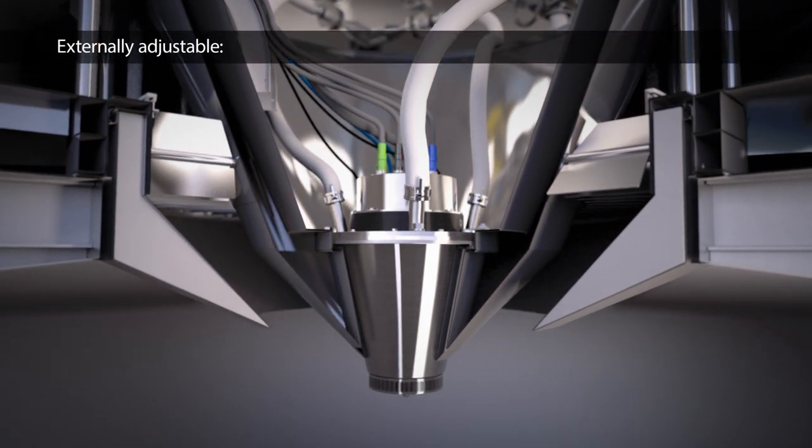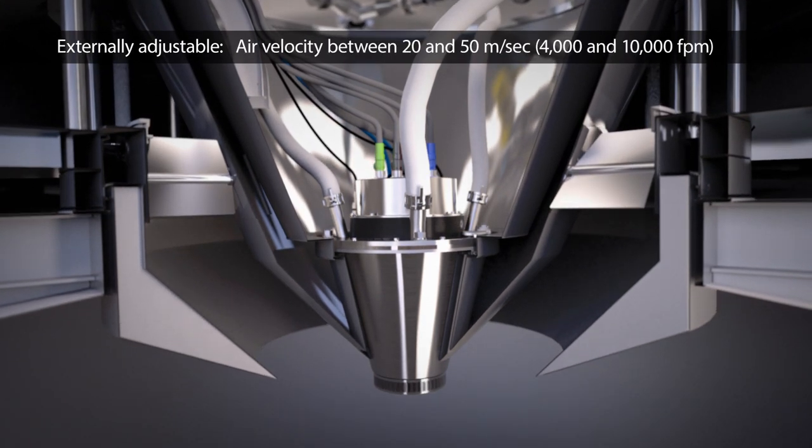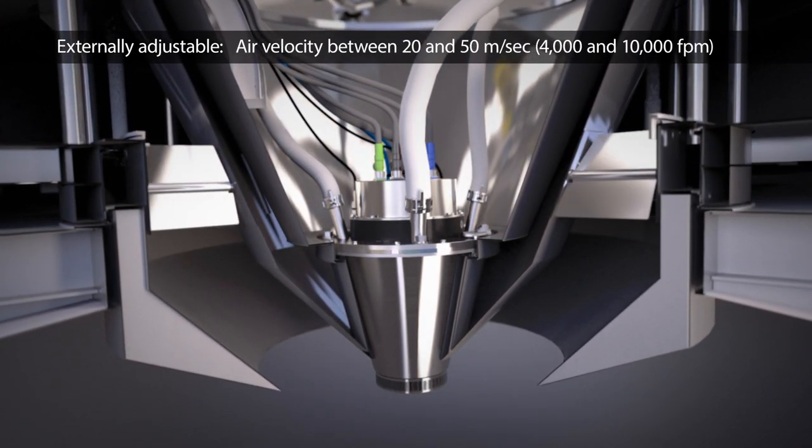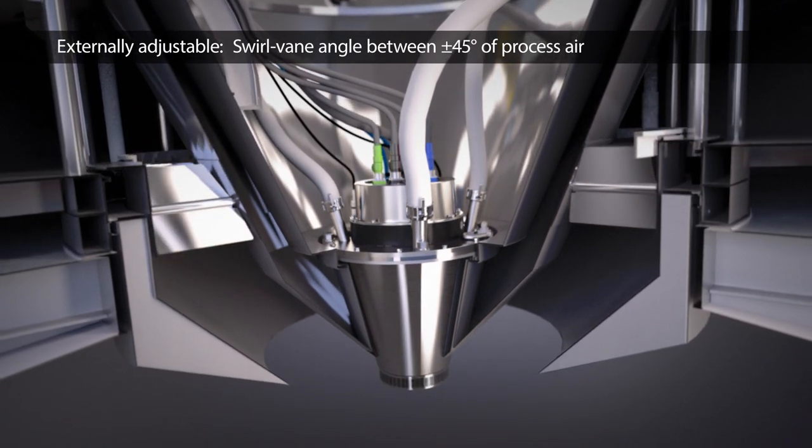The introduction of an adjustable air distributor enables airspeed to be exchanged externally, through an integrated velocity cone, between 20 and 50 meters per second. The swirl vane angle adjustment enables the vanes to vary between plus or minus 45 degrees.